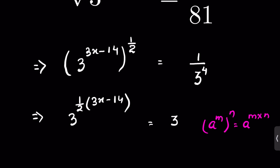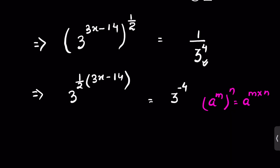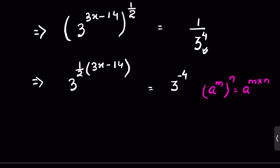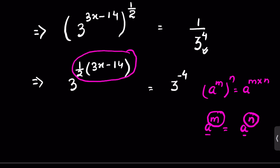And this we can write as 3 raised to the power of negative 4, because a negative exponent means the multiplicative inverse of the base raised to the positive power. So 1 upon 3 raised to the power 4 equals 3 raised to the power minus 4. Again, there is a rule: if a raised to the power m equals a raised to the power n, and a is not equal to 0 or 1, then m is equal to n.